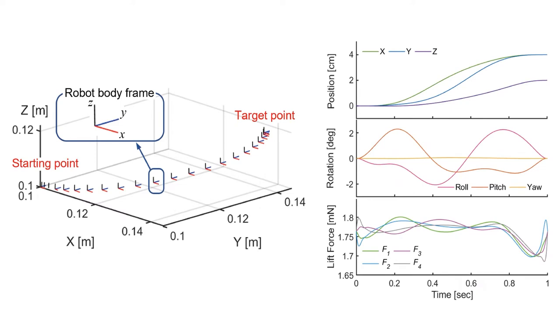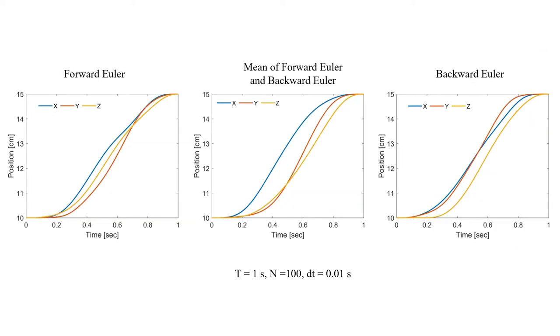This is one of the trajectories we get from the optimizer. As you can see, it is very smooth. And here is a comparison of different integrators. The optimized trajectories are quite different from each other since the time step is not so small.